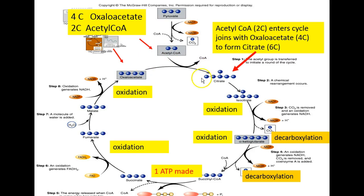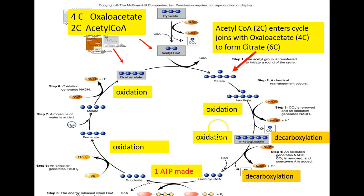Acetyl coenzyme A is a two-carbon compound; oxaloacetate is a four-carbon compound. When both come together, a six-carbon compound called citrate is formed. Citric acid is converted to isocitrate, which will quickly undergo an oxidation and decarboxylation step, turning the six-carbon compound into a five-carbon compound by removing hydrogen atoms. The end result is alpha-ketoglutarate.